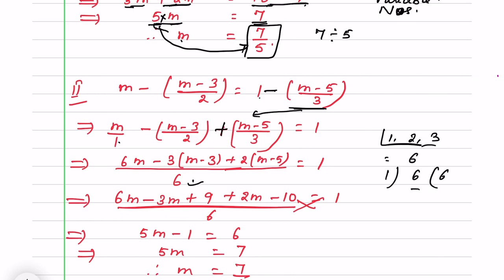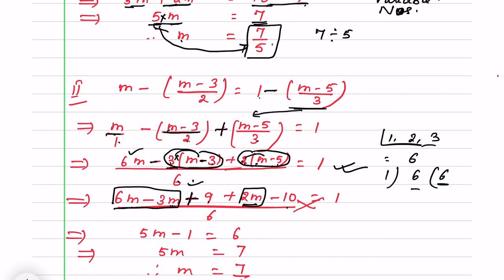With LCM 6, I write 6 in the denominator. 6 divided by 1 times m gives 6m. For (m minus 3) by 2: 6 divided by 2 is 3, so I multiply 3 by (m minus 3) — I write it in brackets. For (m minus 5) by 3: 6 divided by 3 is 2, so it is 2 times (m minus 5). Expanding: 3m minus 9 plus 2m minus 10, all over 6.